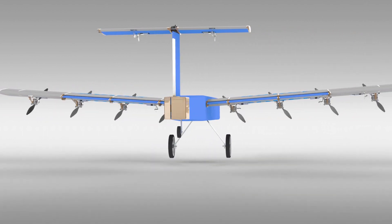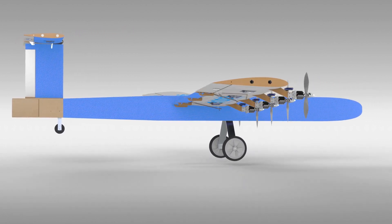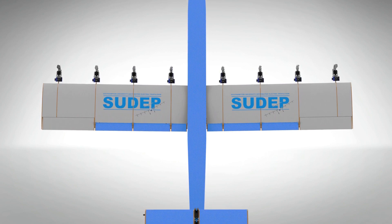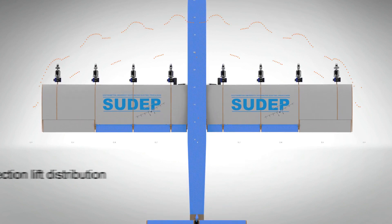Distributed Propulsion is the spread of propulsor modules across the span of the wing, covering a large area of the wing and prop wash resulting in increased local velocity and therefore lift production for a given airspeed.